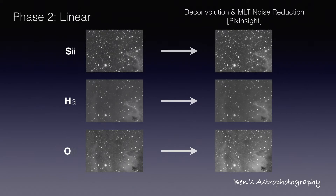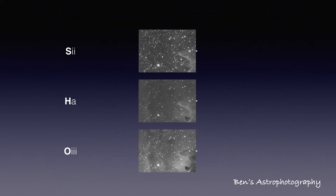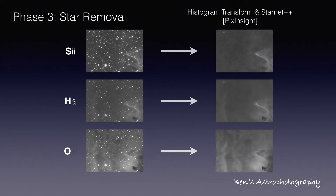In phase three, I stretch the masters, making them non-linear, because my next step — removing stars with Starnet++ — only works for stretched images.